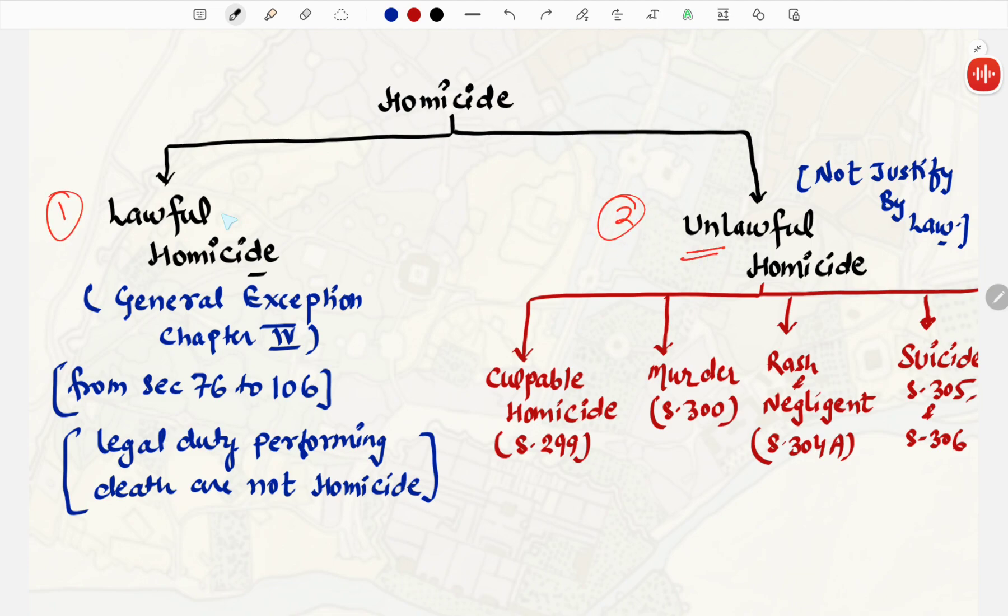Homicide is further divided in two parts. The first part is Lawful Homicide, and the second one is Unlawful Homicide. The lawful Homicides are ones that fall under the IPC's fourth chapter on general exceptions, and are hence not penalized. Lawful Homicide means legal duty performing ke waqt kisi ki death ho jana. This comes under Chapter 4, IPC, from section 76 to 106. The homicides that are penalized under the code is Unlawful Homicide. Unlawful Homicide is the death which is not justified by law.